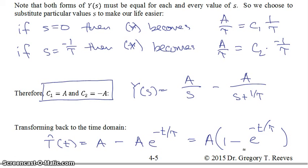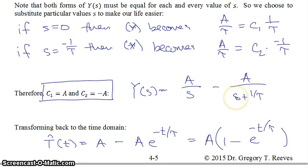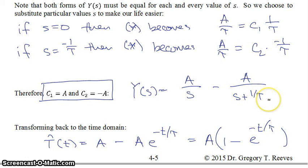We're going to be using partial fraction expansion all the time in many different cases. Next we'll look at three different possible cases: one where the denominator has only real values of s; one where there are complex values of s from the denominator; and one where s solves the denominator equation multiple times — for example, if the denominator were (s plus 1 over tau) squared. We'll see those in the next screencasts.